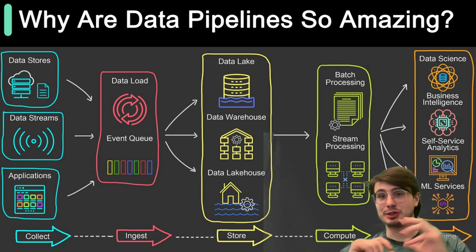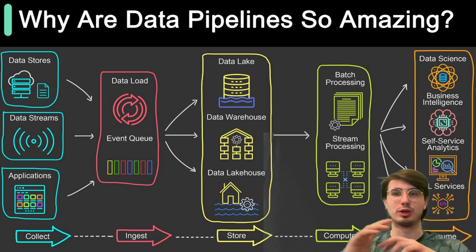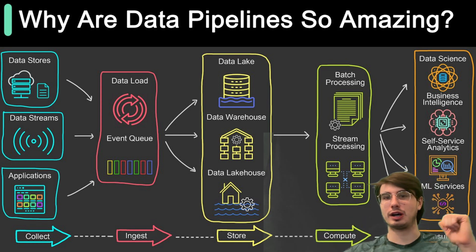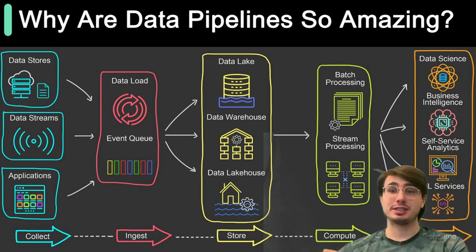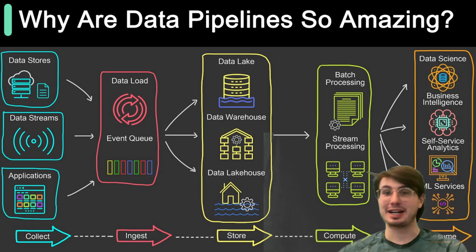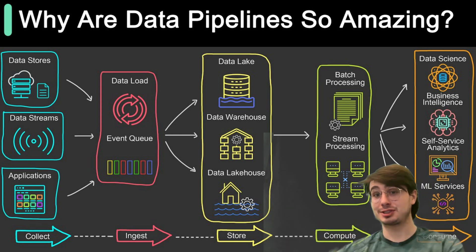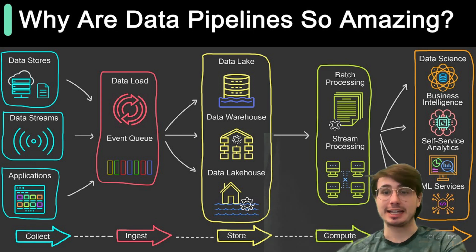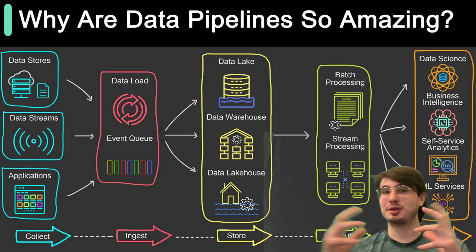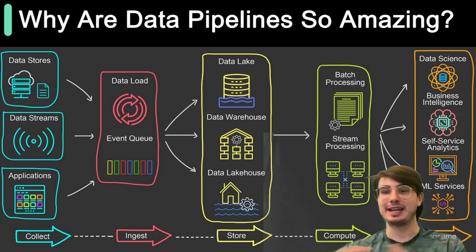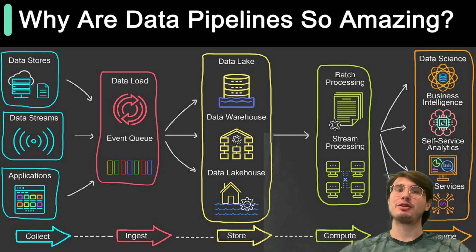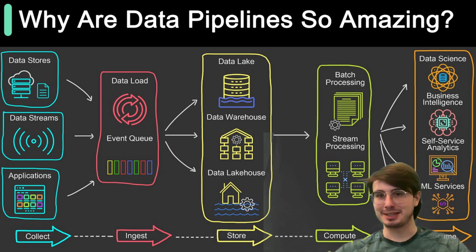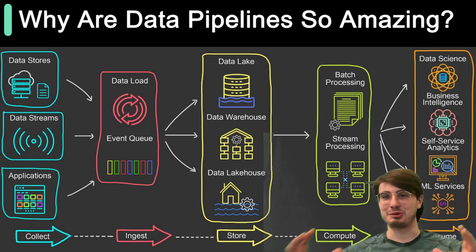You might not think it, but every time you make a search on Netflix, or you buy something on Amazon, or you even just click on an ad, the operations that are giving you a recommendation of what to buy, or what to watch, or what ad to serve you — that's all handled by different types of data pipelines. So that's what I'm going to show you today: what are those different types of data pipelines, and really just give you everything you need to know to understand how data moves behind the scenes throughout the world.